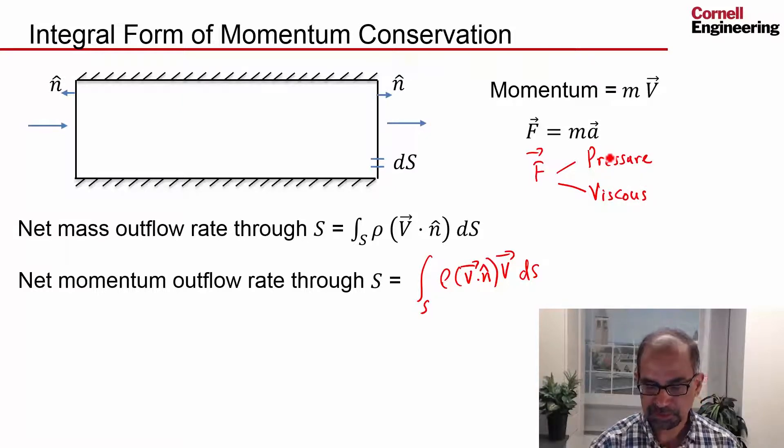Let's consider the pressure first. On ds, the pressure is going to be along the inward normal, so the magnitude of the pressure force is going to be p ds and the direction is going to be -n.